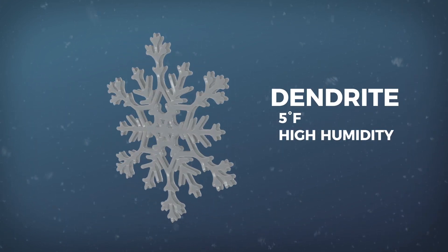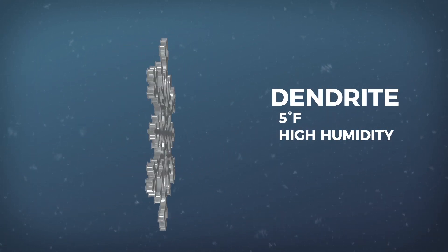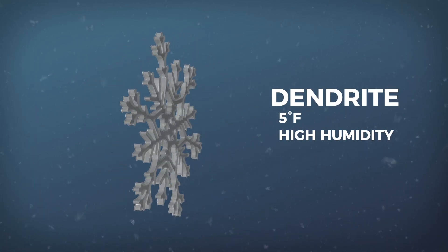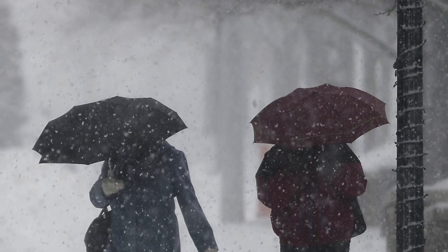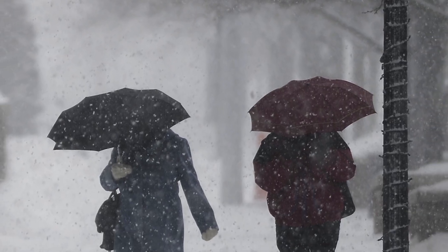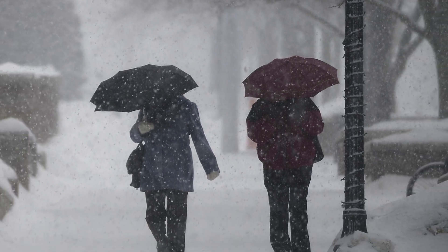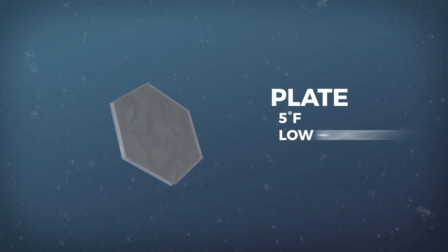The classic snowflake is called a dendrite — it's the biggest, most symmetrical snowflake. Dendrites form at a temperature around 5 degrees Fahrenheit with high humidity. As the temperature where the snowflake is born is warmer or colder, the size of the snowflake goes down and the shape changes. With the same temperature around 5 degrees Fahrenheit but lower humidity, dendrites turn into plate snowflakes.